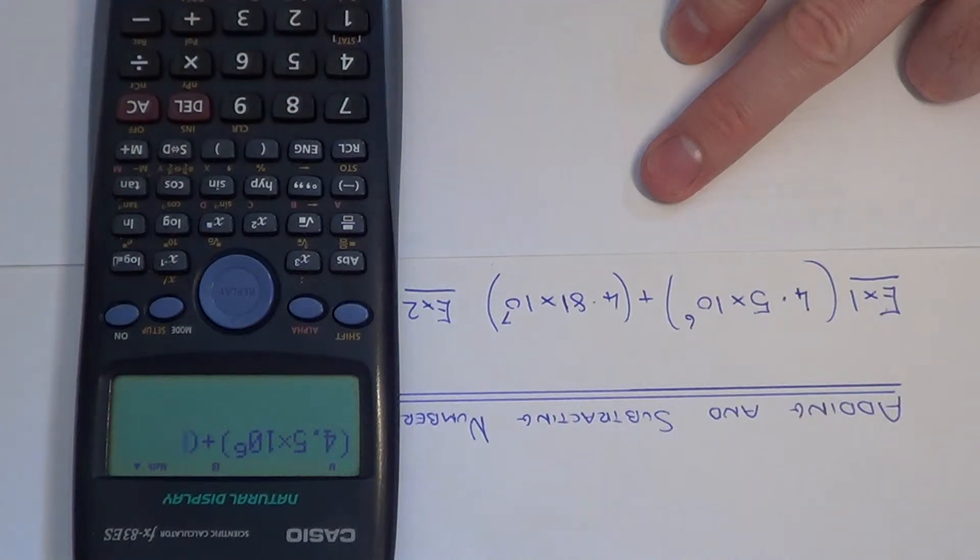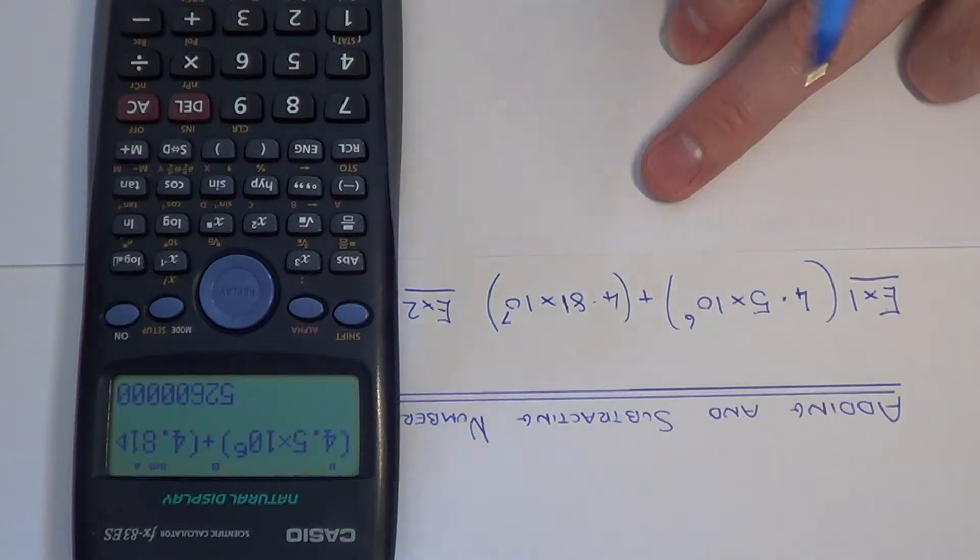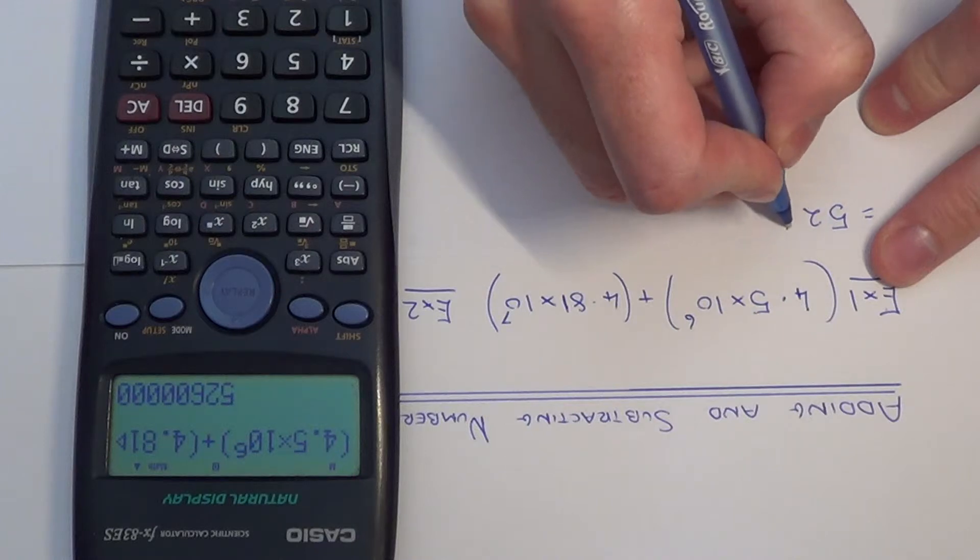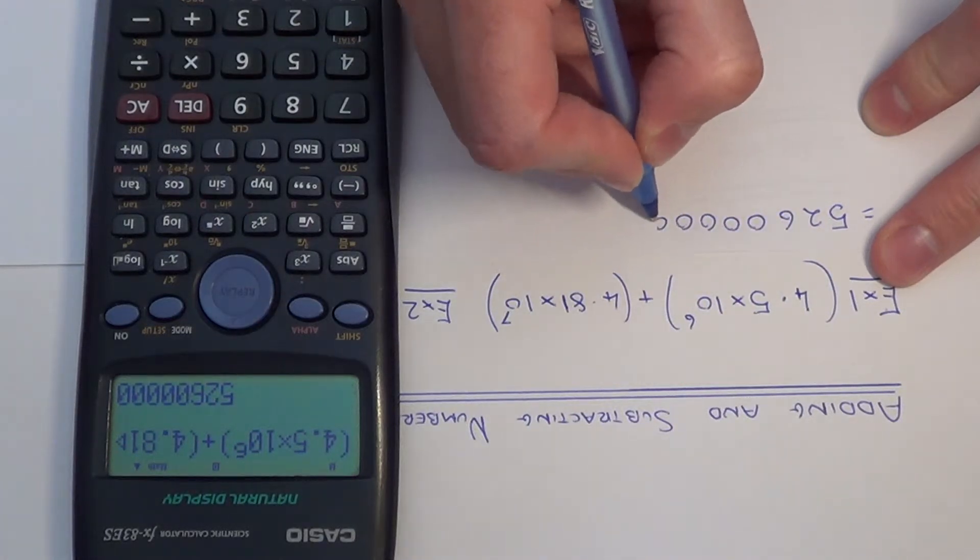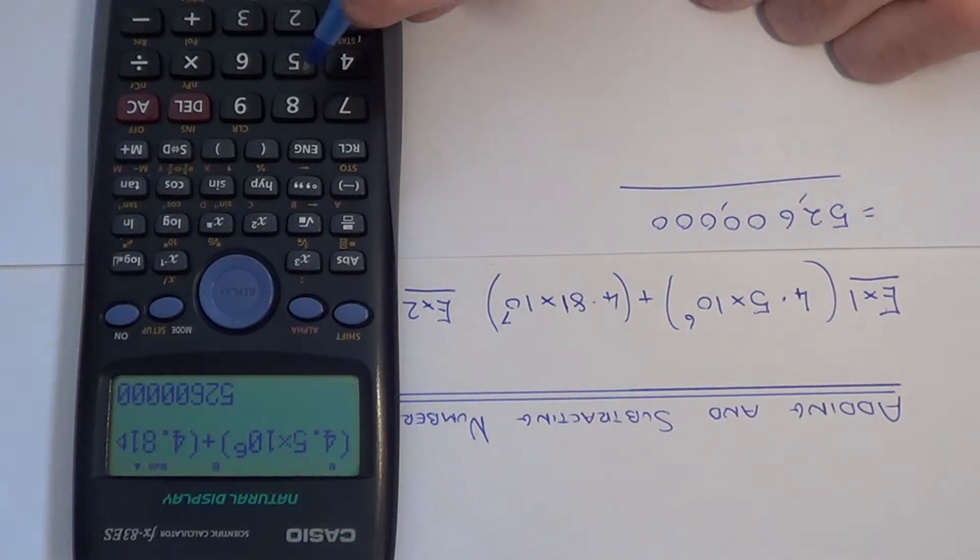Plus, again type the second one in the same way: 4.81 times 10 to the power of 7. So that's our second number written in. And we get the answer 52,600,000.